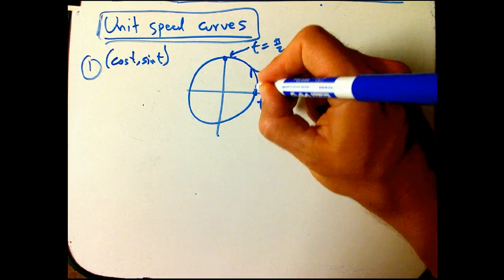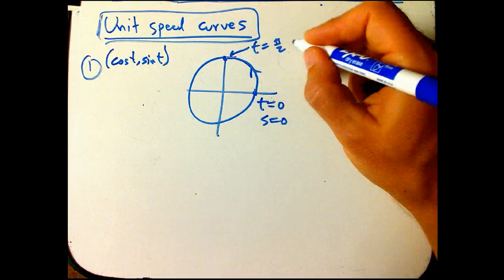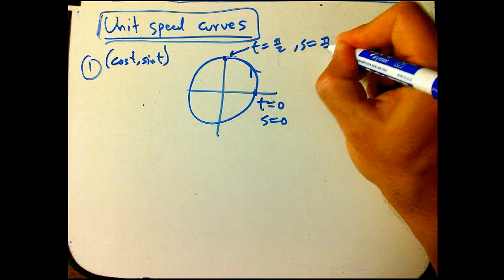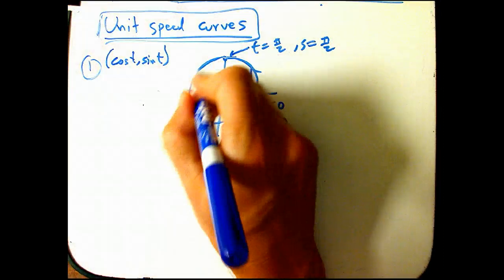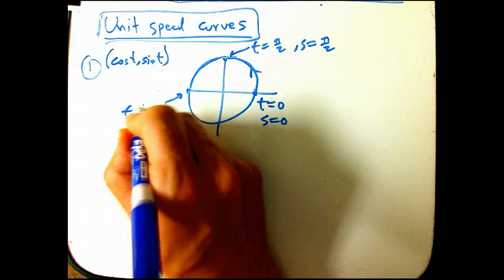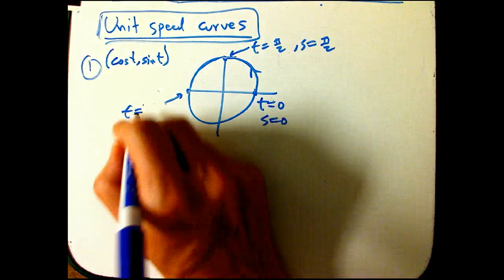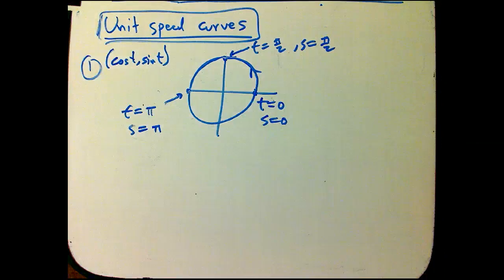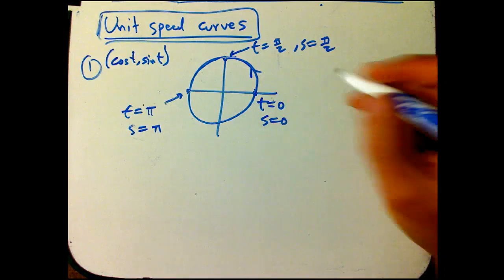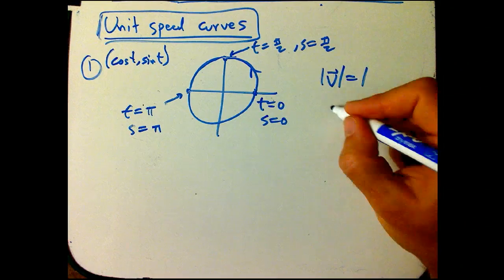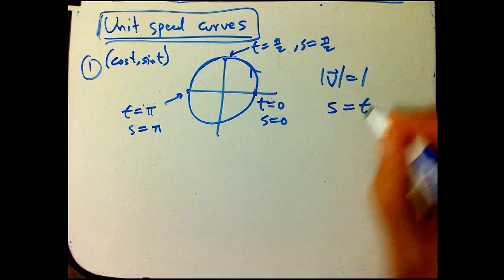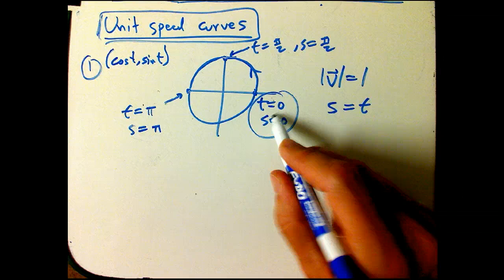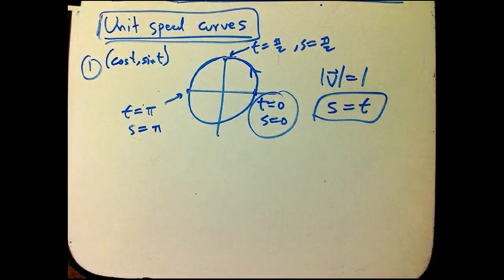And it's also, of course, if this is the unit circle, the arc length of quarter circle so far is s equals pi over two. And over here, to get cosine t, sine t to be minus one, zero, that's t equals pi. But of course, it's also s equals pi. This isn't surprising because we know that the speed here was equal to one. And so s is just t plus a constant. And because we started at t equals zero, it's just s equals t.